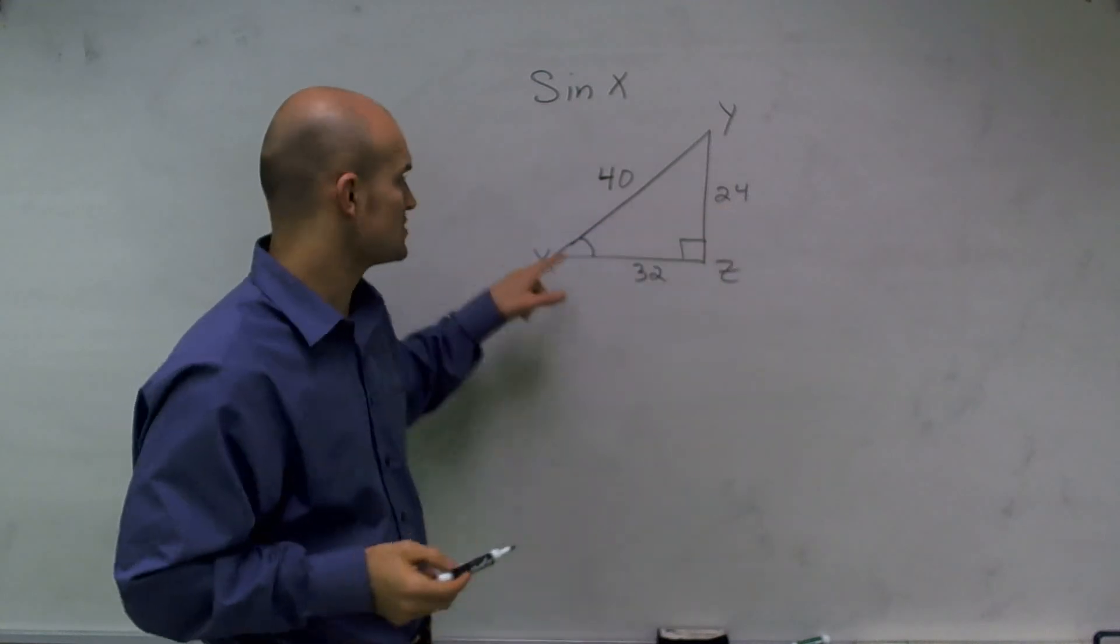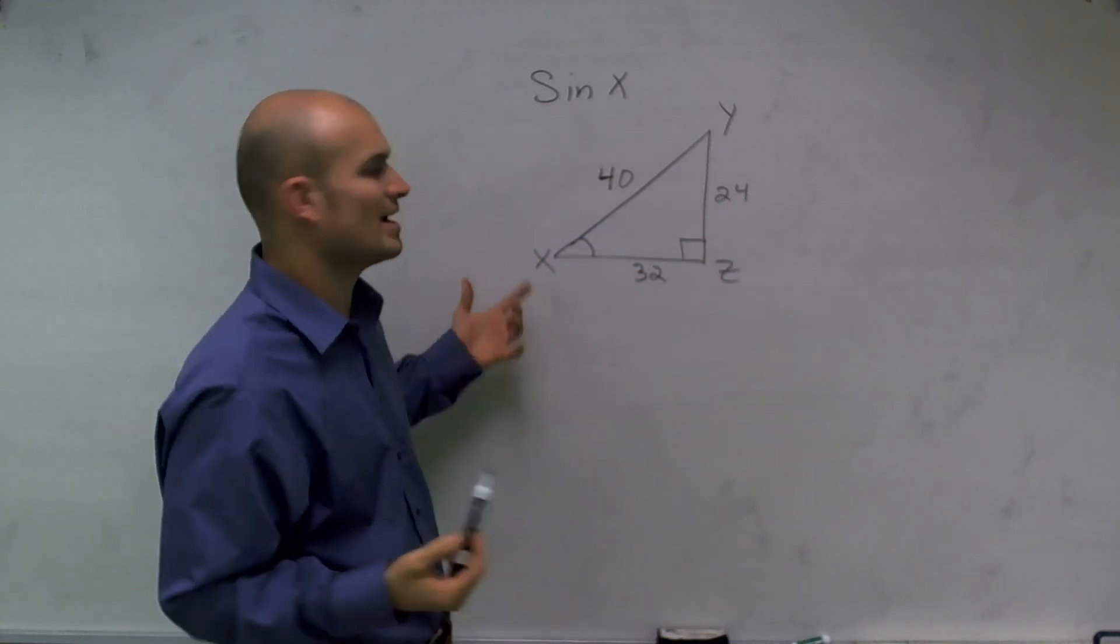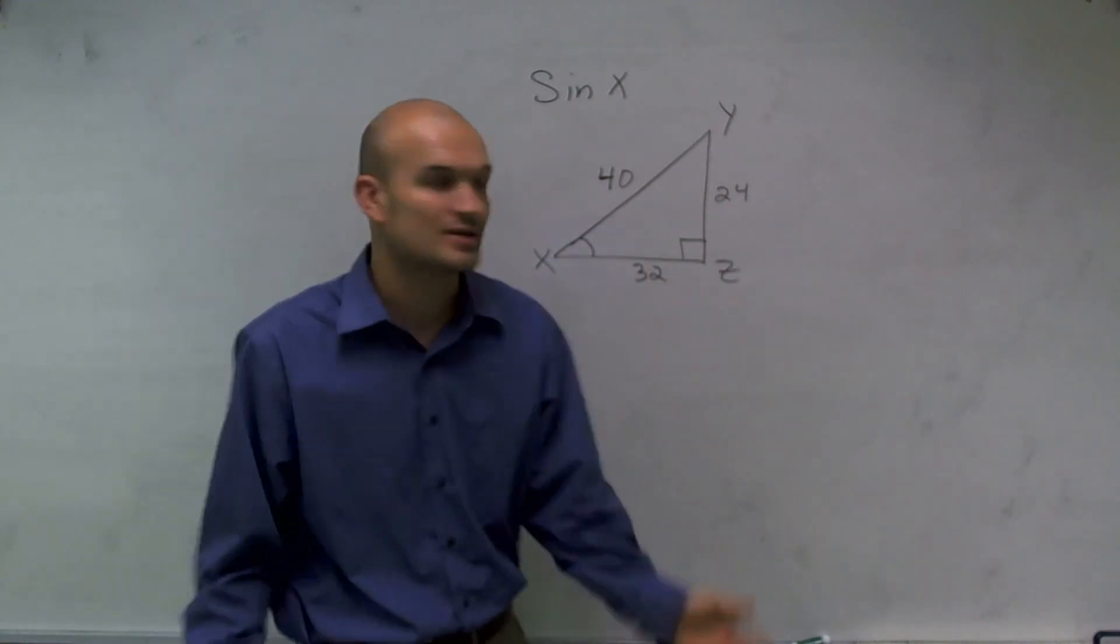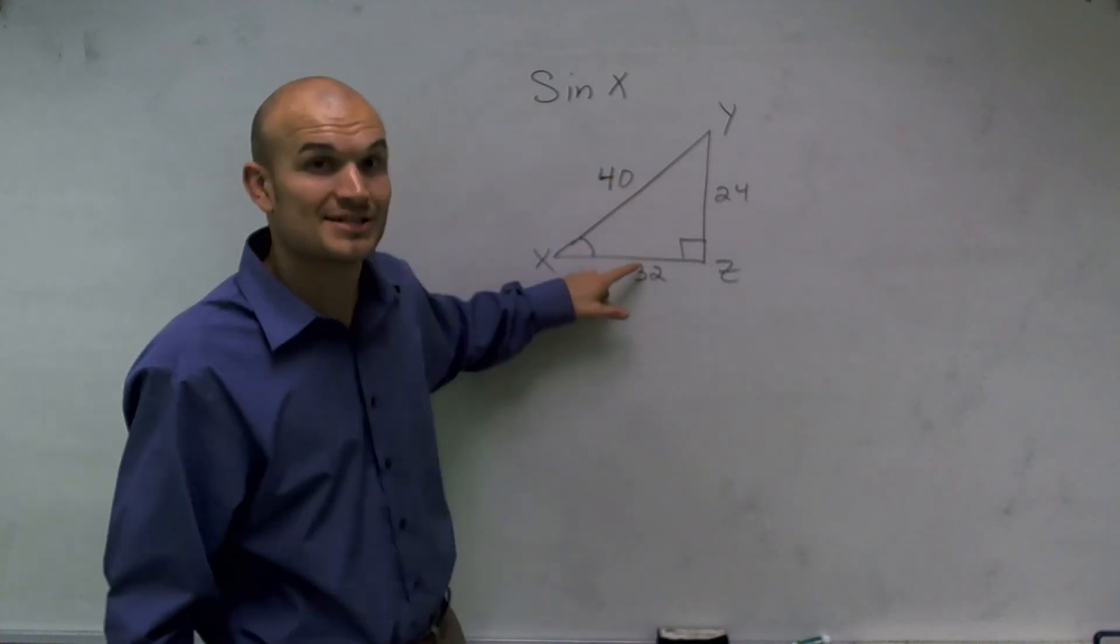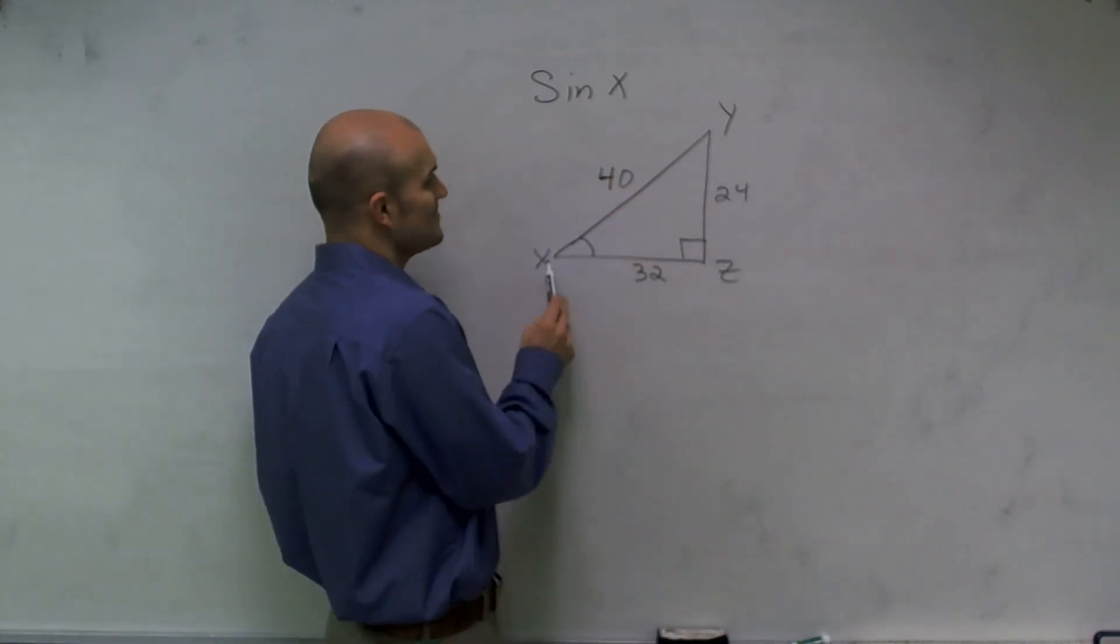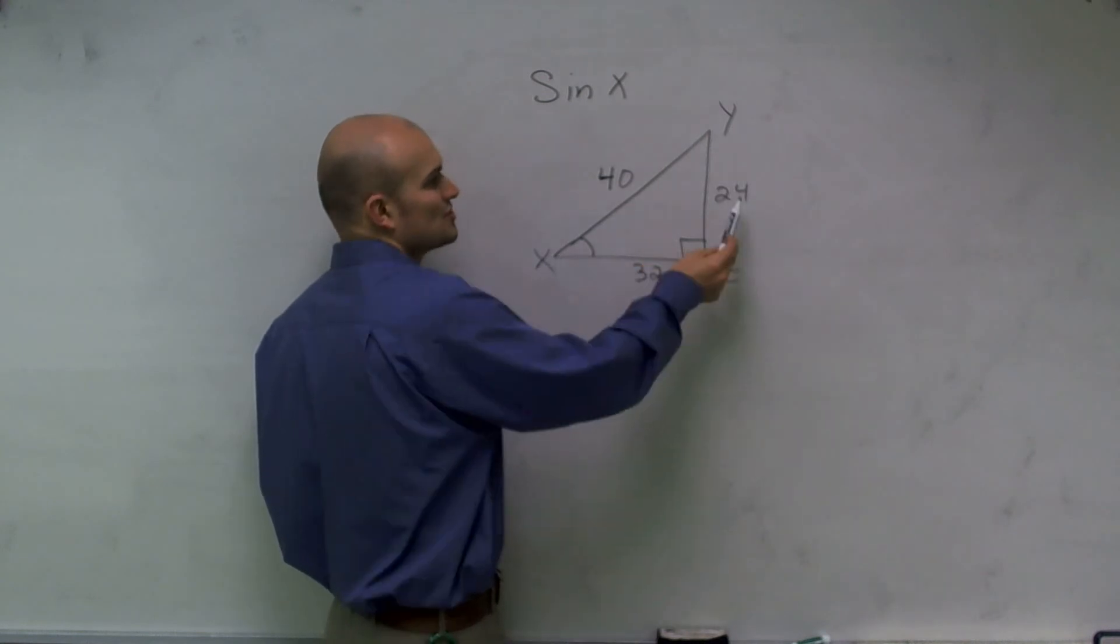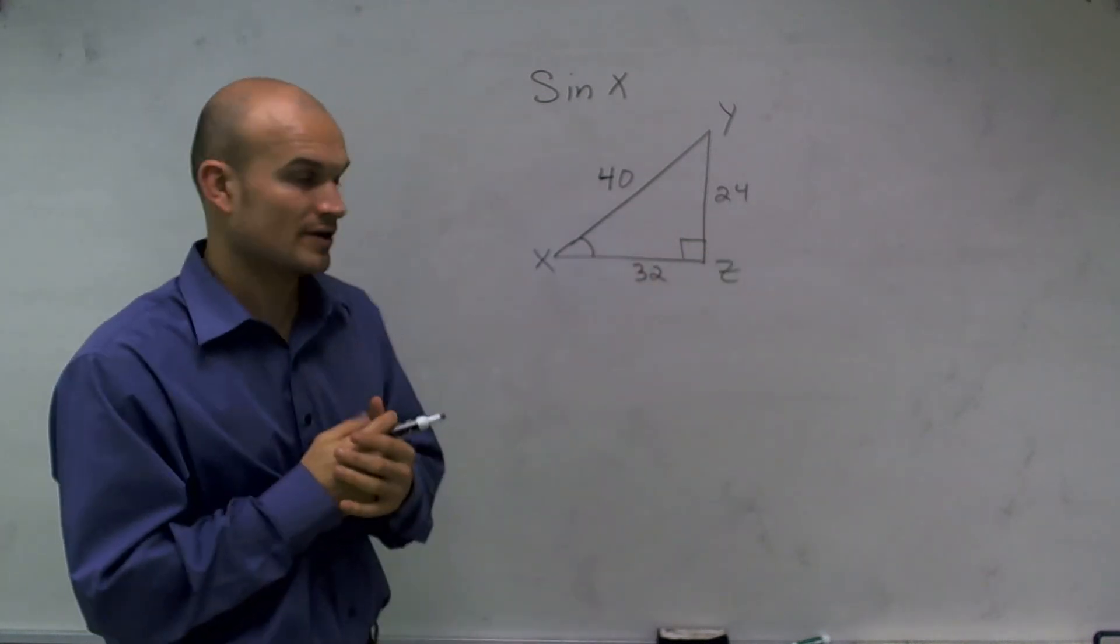And then 24, which is going to be my opposite side. The reason why is kind of elimination. I already have my hypotenuse and my adjacent. That only leaves one more. But lastly, you can always look at it because it's directly opposite of the angle you're trying to figure out.